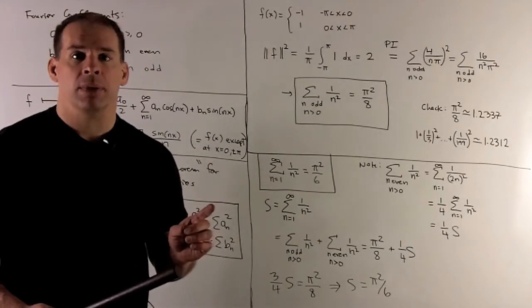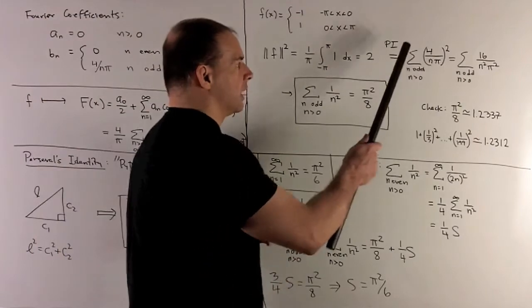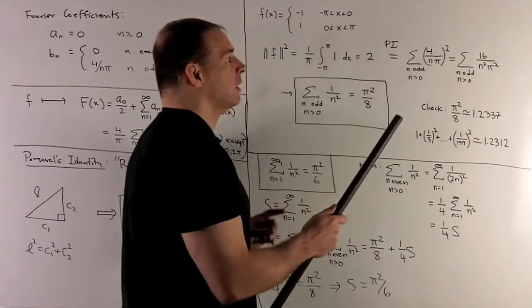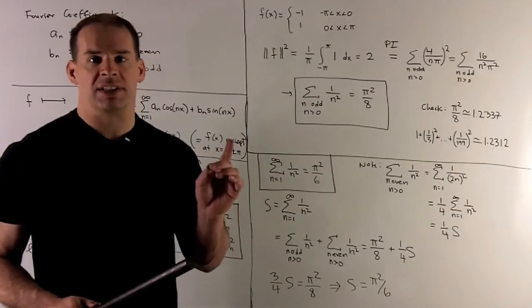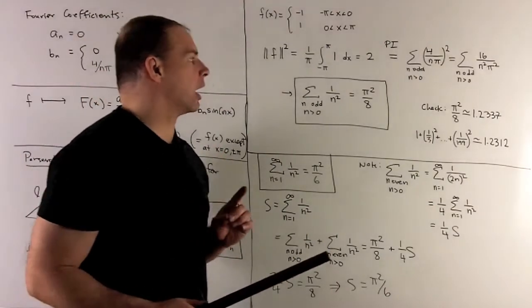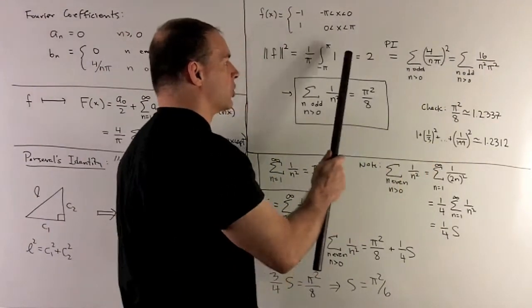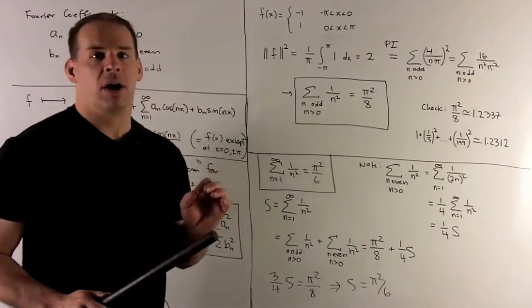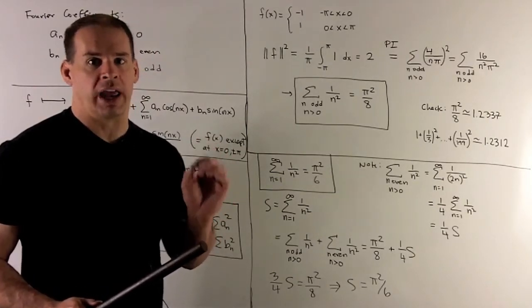On the other side, we only have to sum up the b sub n's. There, we're going to have the sum over n odd and positive of 4 over n pi squared. That will become 16 over n squared pi squared. If we push the 16 over pi squared to the other side, we're going to get the sum of 1 over n squared over the positive odd integers, gives me pi squared over 8.